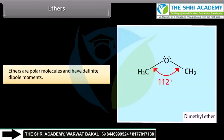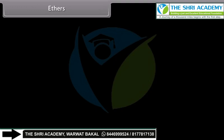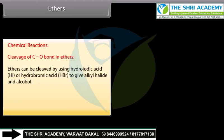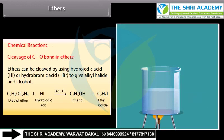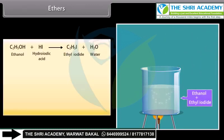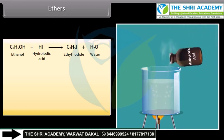Ethers are polar molecules and have definite dipole moments. Chemical reactions — Cleavage of CO bond in ethers: Ethers can be cleaved by using hydroiodic acid or hydrobromic acid to give alkyl halide and alcohol. Hydroiodic acid reacts with diethyl ether and it forms ethanol and ethyl iodide. With excess of hydroiodic acid, the alcohol formed further reacts to form ethyl iodide.